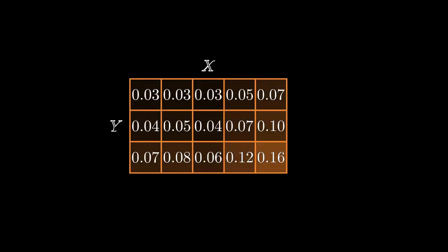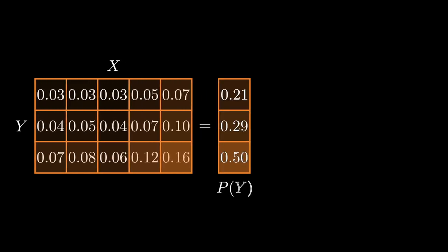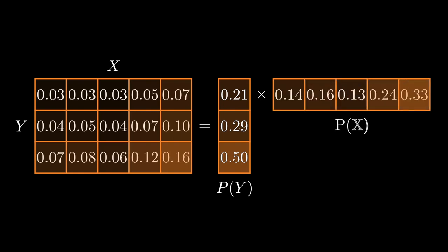Let's have a look at what independence might mean in a simple bivariate PMF. Here, the random variable Y can take three different values and the random variable X can take five different values. This gives us a table of 15 numbers that sum to one. In general, these could be any 15 non-negative numbers that sum to one. However, if X and Y are independent, then this matrix is rank one. That is, it can be explained by eight numbers: three for the marginal P(Y) and five for the marginal P(X).